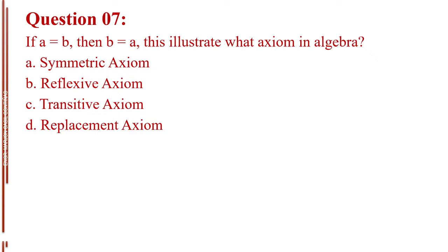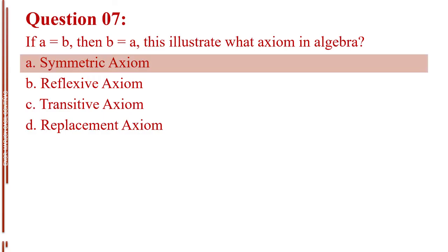Question number seven. If A equals B, then B equals A. This illustrates what axiom in algebra? Letter A, symmetric axiom. Letter B, reflexive axiom. Letter C, transitive axiom. Letter D, replacement axiom. The answer is Letter A, symmetric axiom.